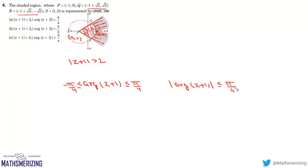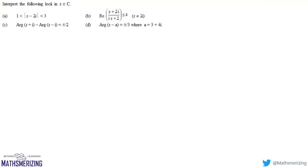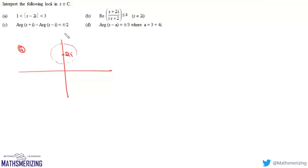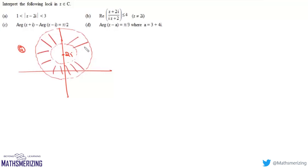The next question asks us to interpret the following locus. This circle has its center at 2i, with two circles: one of radius 1 unit and another of radius 3 units. The condition mod(z - 2i) lies between 1 and 3 means we are talking about all points in the annular region between these two circles.